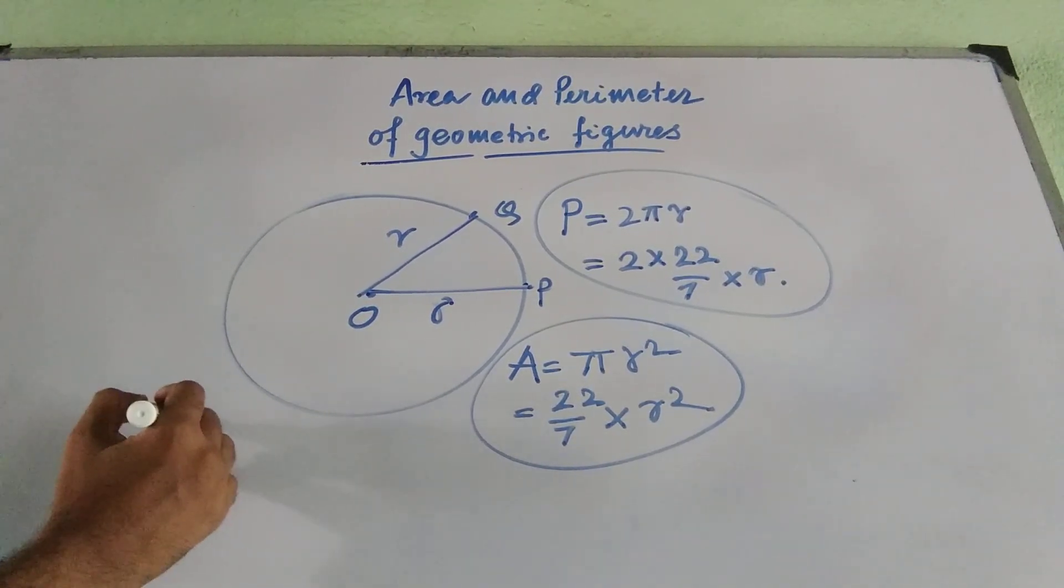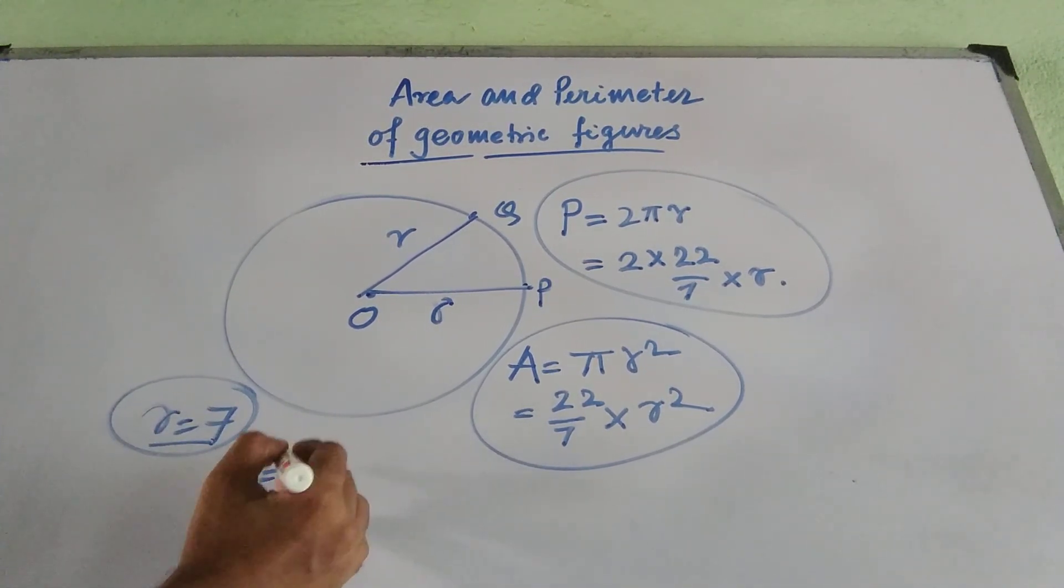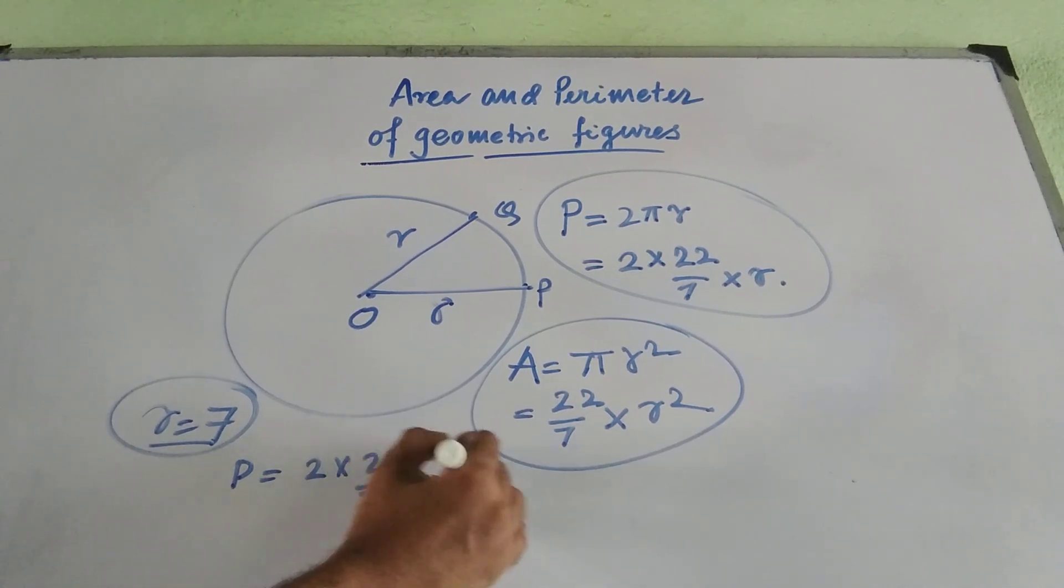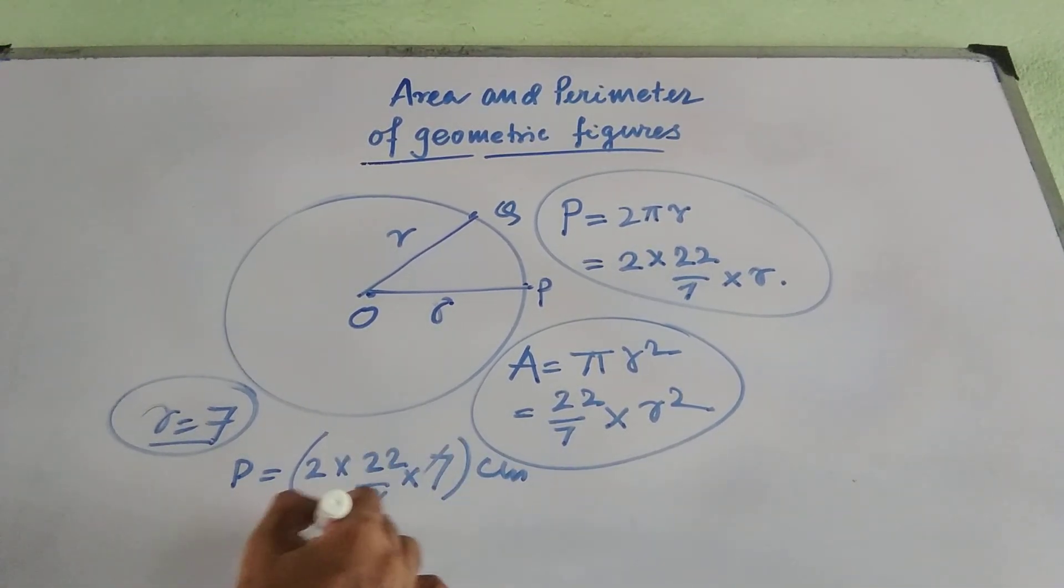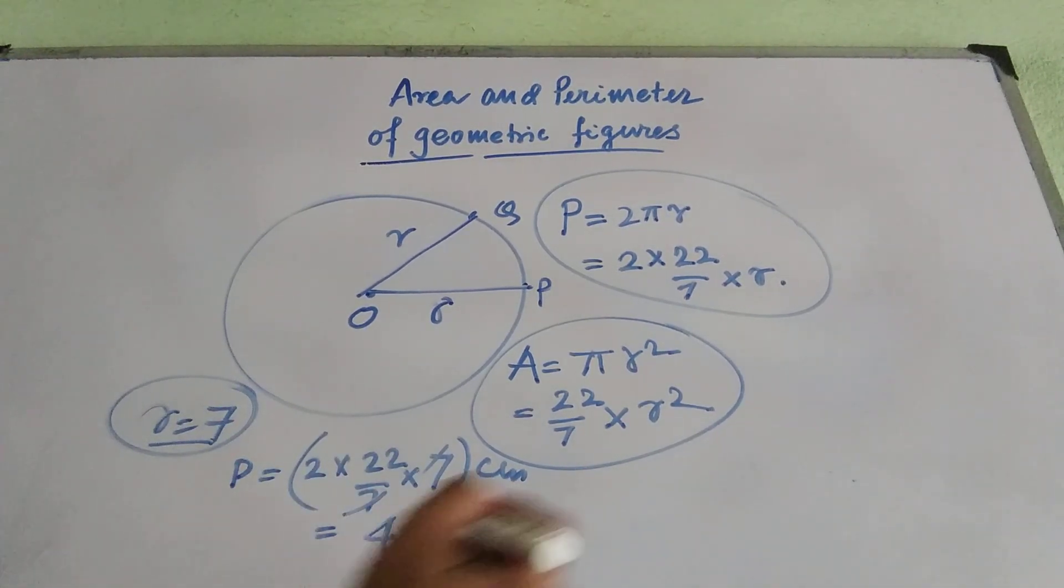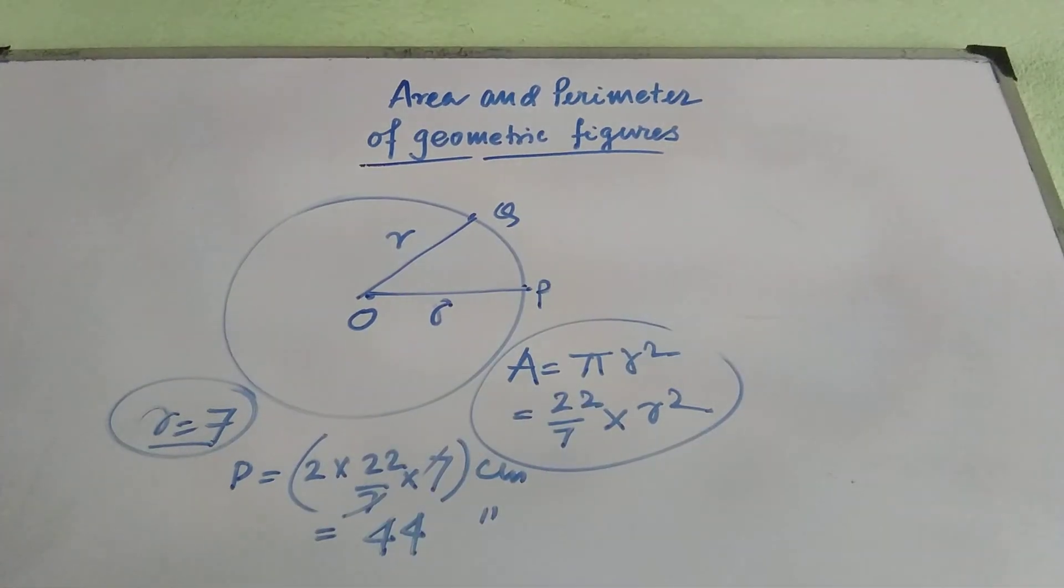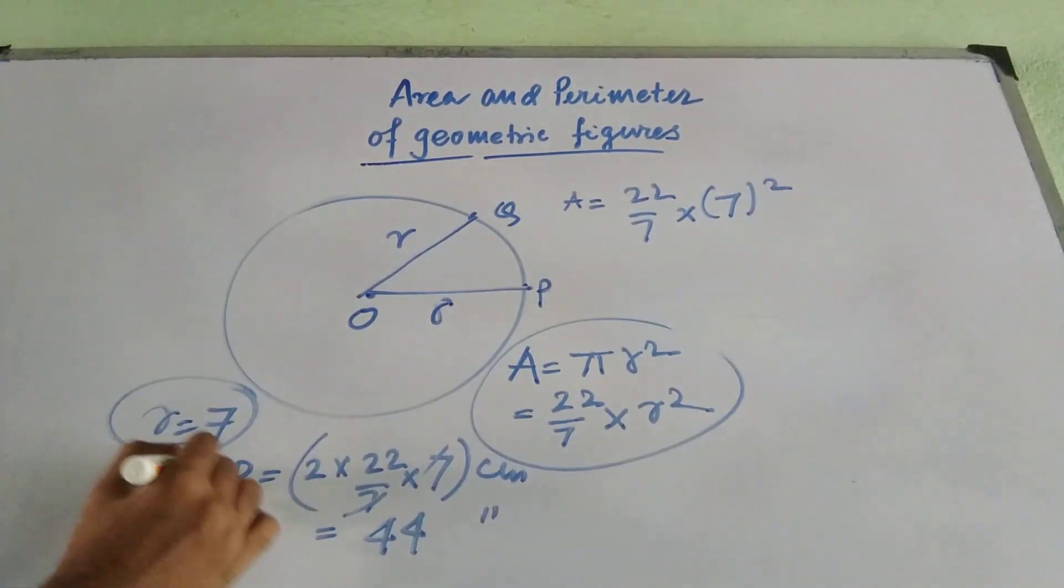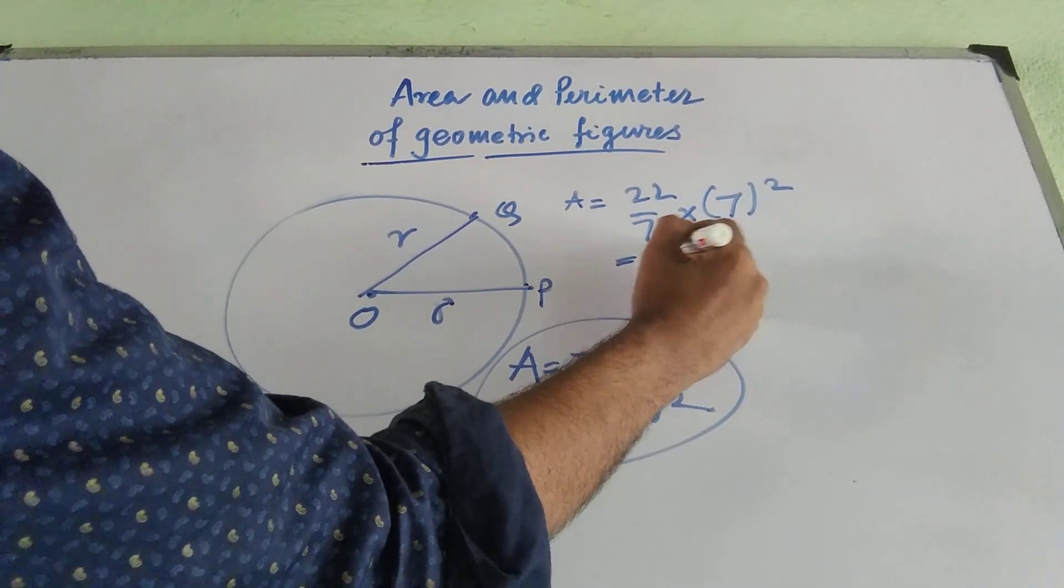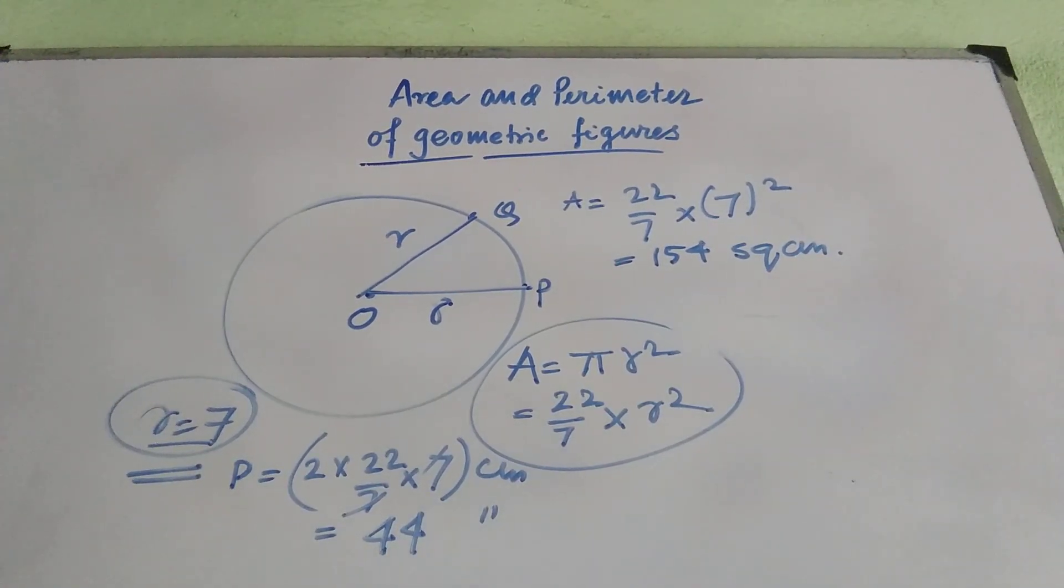Now for an example, if R equal to 7, for example, let us take an example of a circle whose radius is 7, then its perimeter will be 2 into 22 by 7 into 7. But keep in mind, the circumference or the perimeter will be in centimeter, because it is calculating length only. So that means, it is 44 centimeter. At the same time, whenever we are calculating the area of a circle, we have to keep in mind that area will be 22 by 7 into 7 whole square, because we have considered in this example R equal to 7. So that means, it is 154, but the unit will be square centimeter, because area is also expressed in square unit. So that is how we find out the perimeter and area of a circle as well.